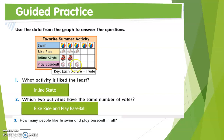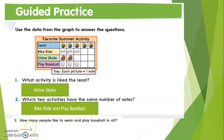How many people like to swim and play baseball in all? The words 'in all' mean we need to add. So we add the swim votes plus the play baseball votes. Swim has five and play baseball has three, so five plus three equals eight.